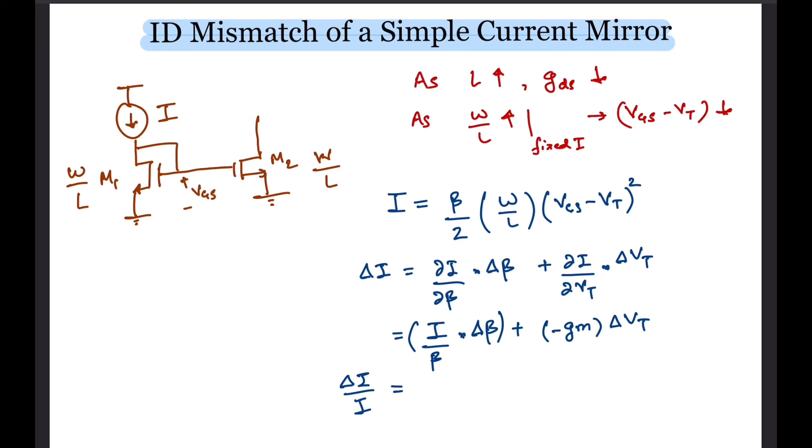So if we divide the whole expression by I we get delta I over I equals delta beta over beta minus 2 by V overdrive times delta VT, since GM is 2I by V overdrive.